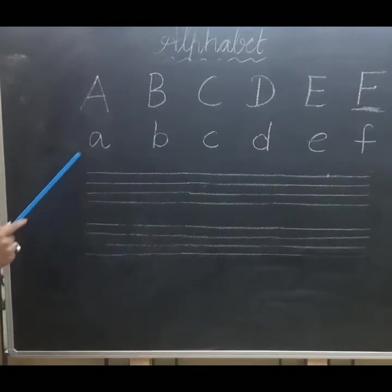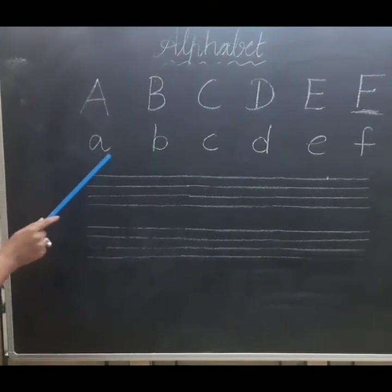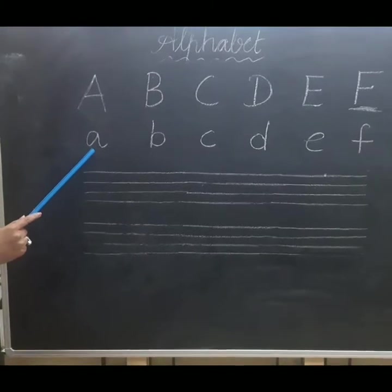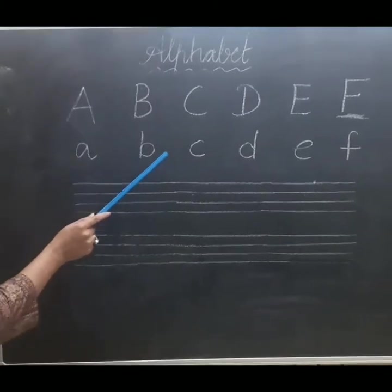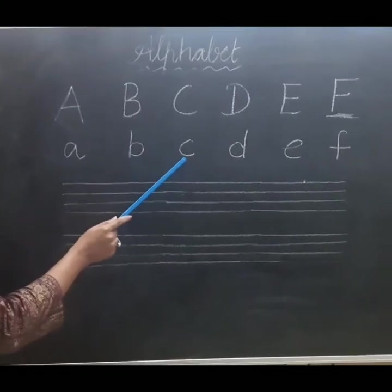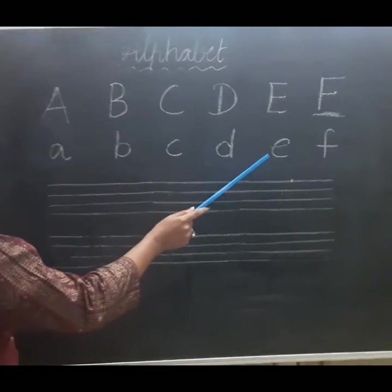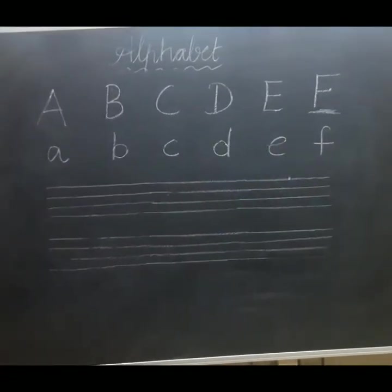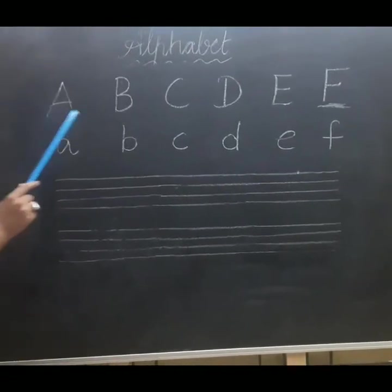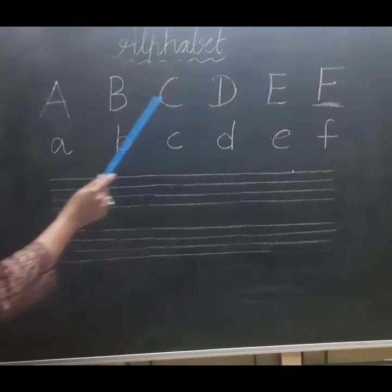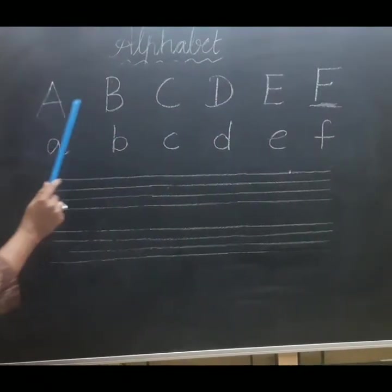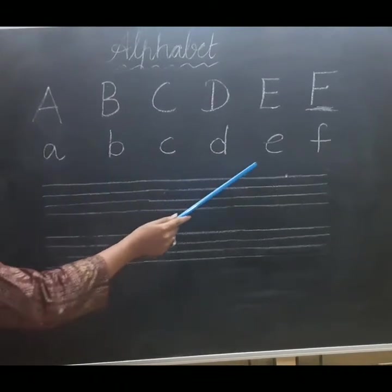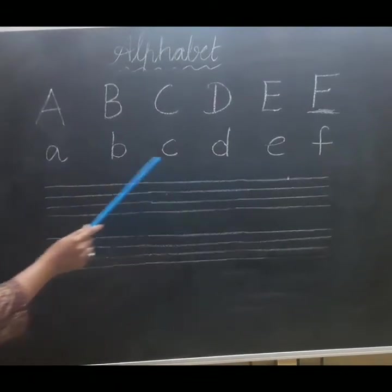And this is small letters. Start with A, B, C, D, E, F. These are all capital letters — mamas. And this is all small letters — babies.